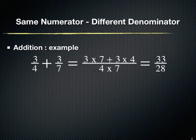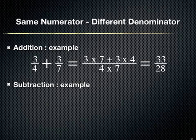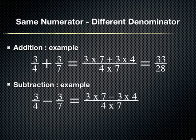For subtraction, the numerator will be obtained by subtracting the multiplication of the first fraction's numerator with the second fraction's denominator, from the multiplication of the second fraction's numerator with the first fraction's denominator. And the denominator will be the multiplication of the two denominators.